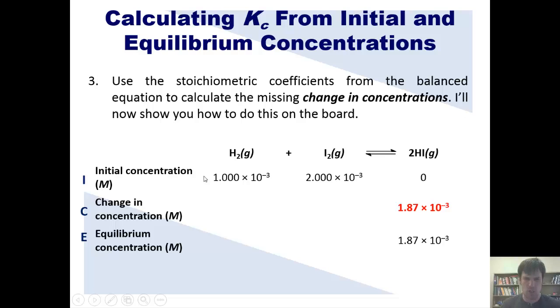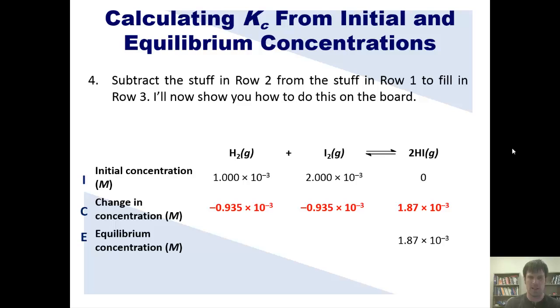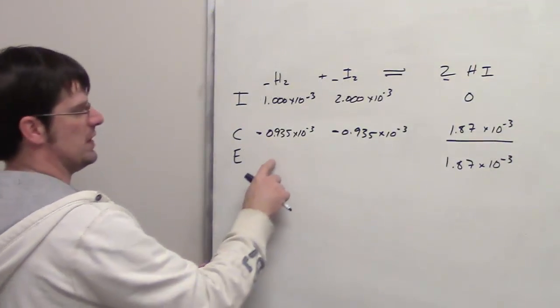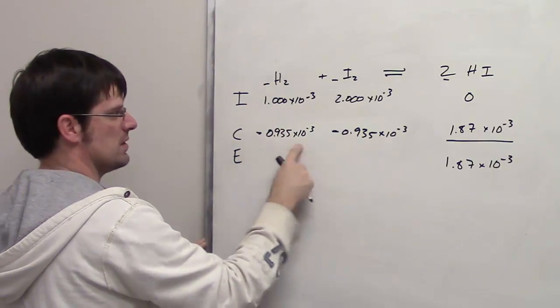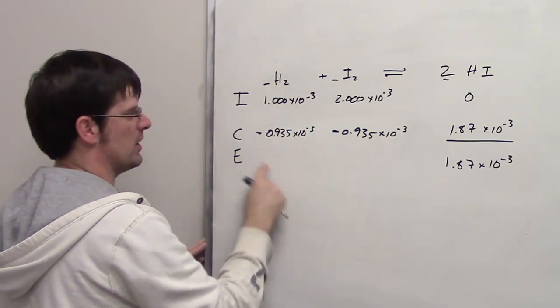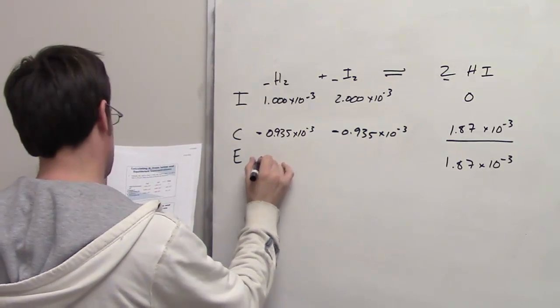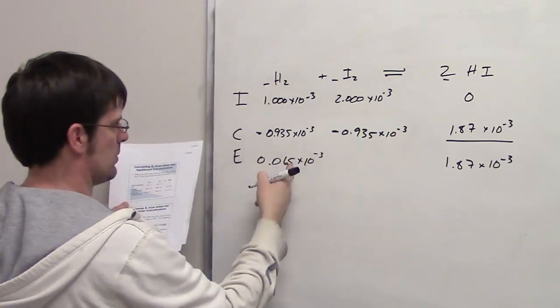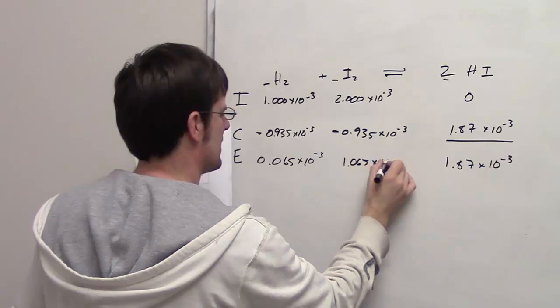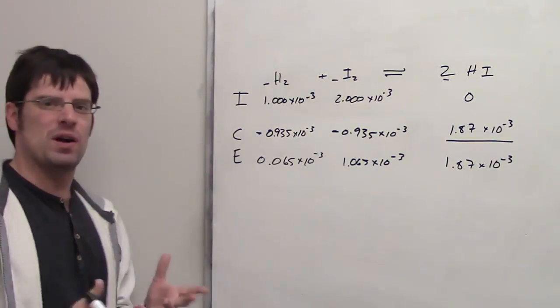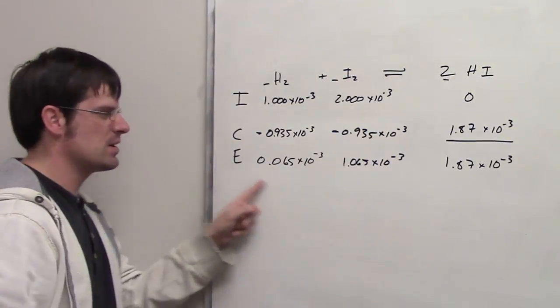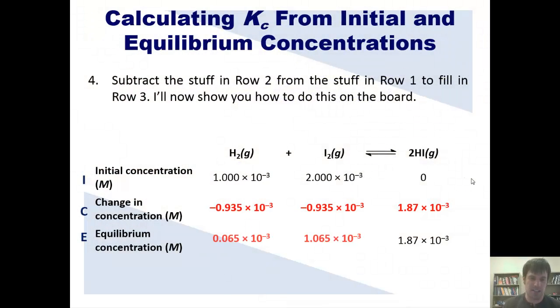The change in concentrations for H2 and I2, then, are these numbers. Now, step 4 is subtract the stuff in row 2 from the stuff in row 1 to fill in the missing places in row 3. I'll now show you how to do that on the board. In order to fill in these two blanks, all we need to do is take this number and subtract from it this number. The answer is going to be our final concentration. We then do the same process for this column. We take that number and subtract from it this number. When I do that, I end up getting 0.065 times 10 to the negative third for my hydrogen, and I get 1.065 times 10 to the negative third for my iodine. Isn't an ice table wonderful? I've got my initial concentration, my change in concentration, and my concentrations at equilibrium.